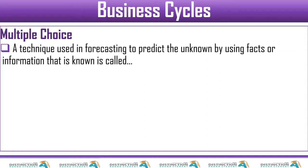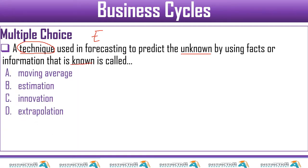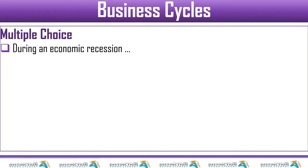Question six: a technique used in forecasting to predict the unknown by using facts or information that is known. When you see the word technique, start anticipating a word starting with E. Someone might think it's estimation, but we never covered that. Innovation — no. Our answer is extrapolation.